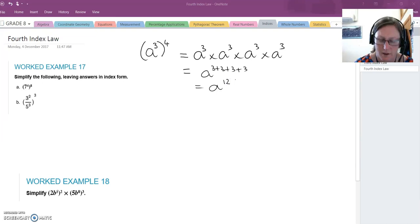Can you see a shortcut? If we multiply those together, we get a to the power of 12. And that's the fourth index law, that for powers to a power, you multiply those index numbers together.